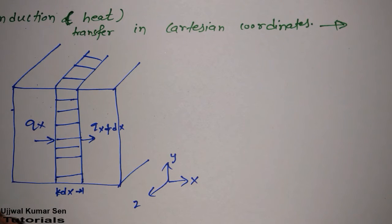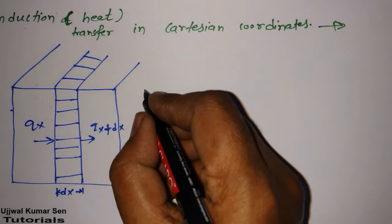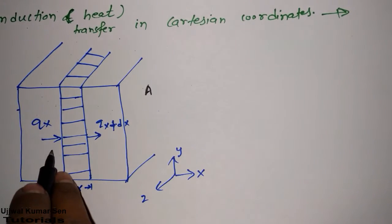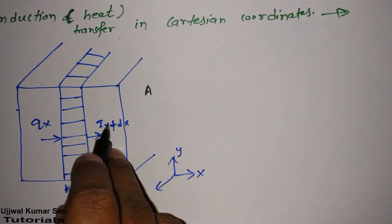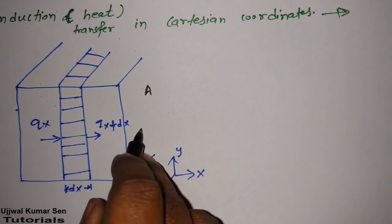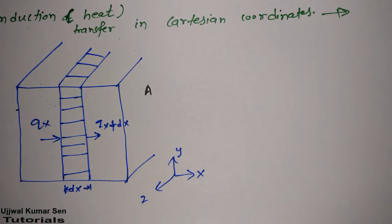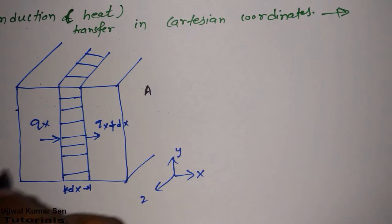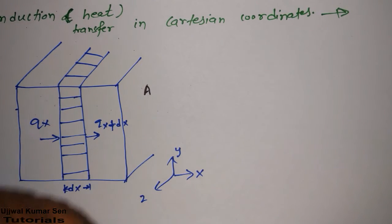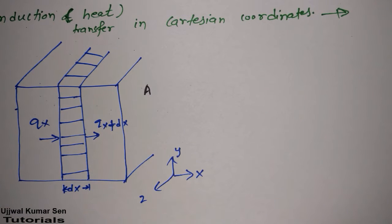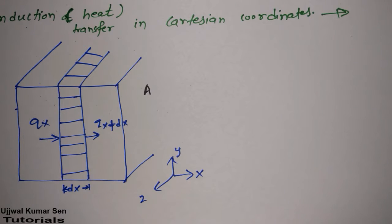We are having Cartesian coordinates right now and in this coordinate, we are considering the area of the coordinate as A. QX is entering here and the outgoing heat is QX plus DX. We wanted to find out how much heat transfer is going on in this coordinate system — that is the ultimate aim.